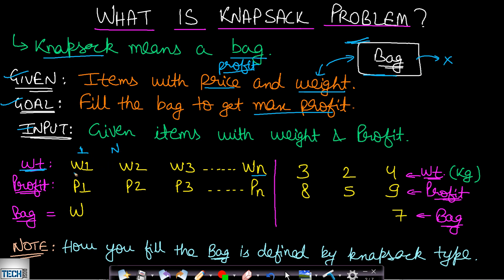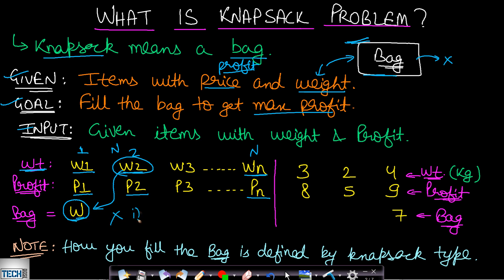Given some inputs containing profit and weight of every item, you will be given n items. You need to find which items to put into your bag so that your capacity doesn't exceed and you get the maximum profit. For example, your first item has weight w1 and profit p1, second item has weight w2 and profit p2, and the nth item has weight wn and profit pn. The bag capacity is w.